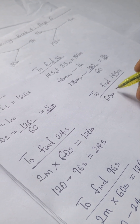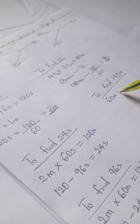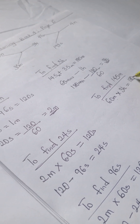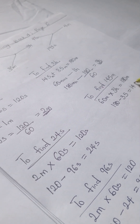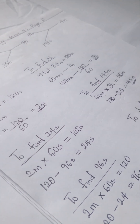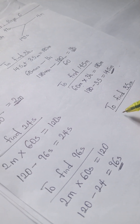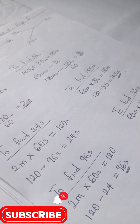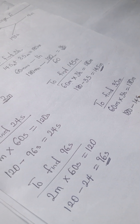To find 145 minutes, remember 60 minutes equals 1 hour. So 60 minutes times 3 hours gives us 180 minutes. Then 180 minutes minus 35 minutes gives us 145 minutes.